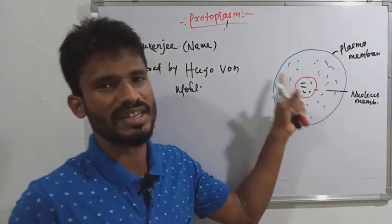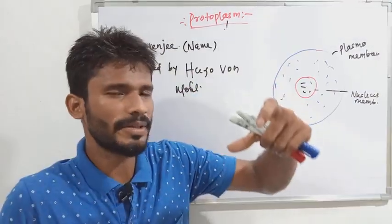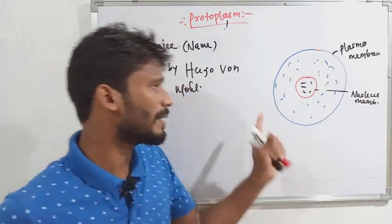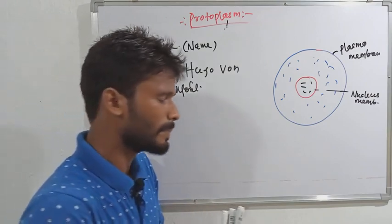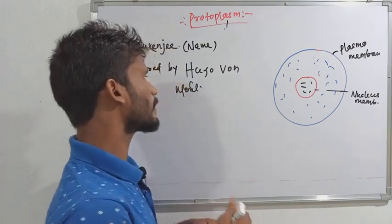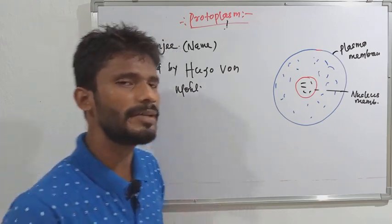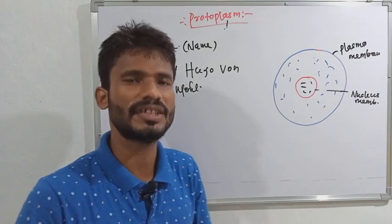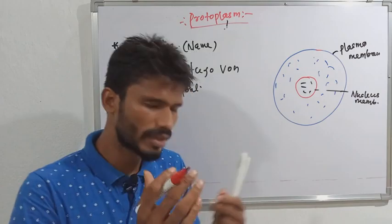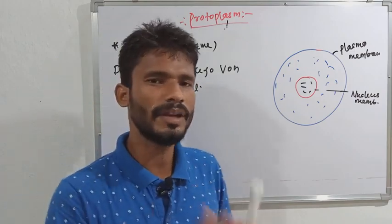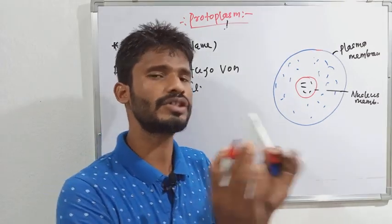What is the function of protoplasm? First, if we look at the composition of protoplasm according to competitive examinations: mostly water — about 75 to 85 percent — and then lipids, carbohydrates, and proteins.